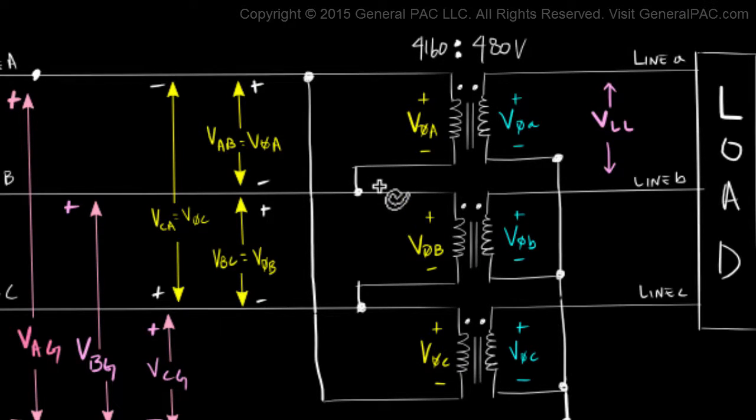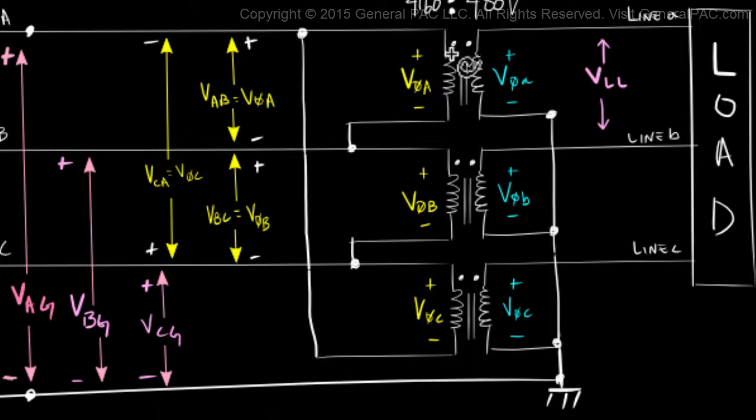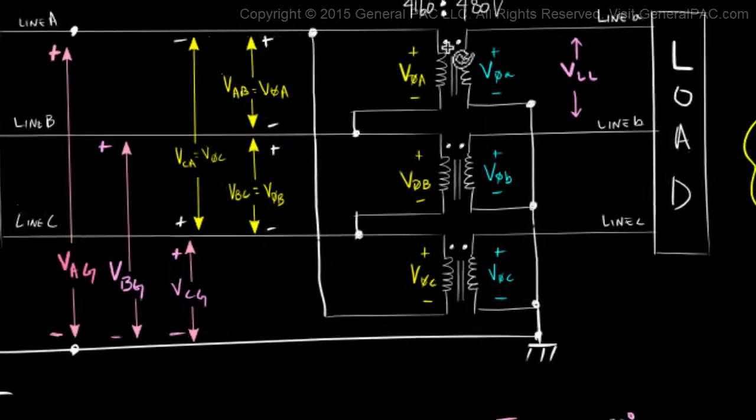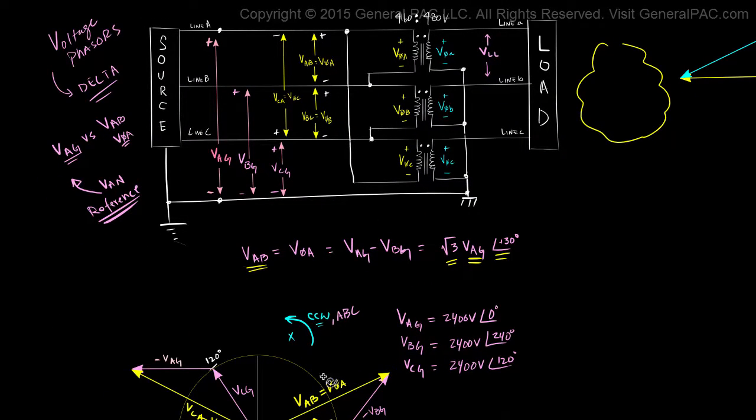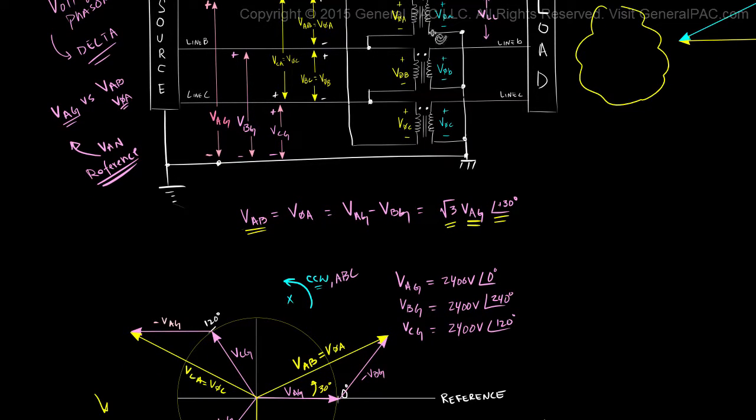Now since we've represented this side as a polarity side of our winding, we're going to represent that polarity side by putting a dot here. So we're saying that for this phasor, this side is a polarity side. This is for phase A winding.